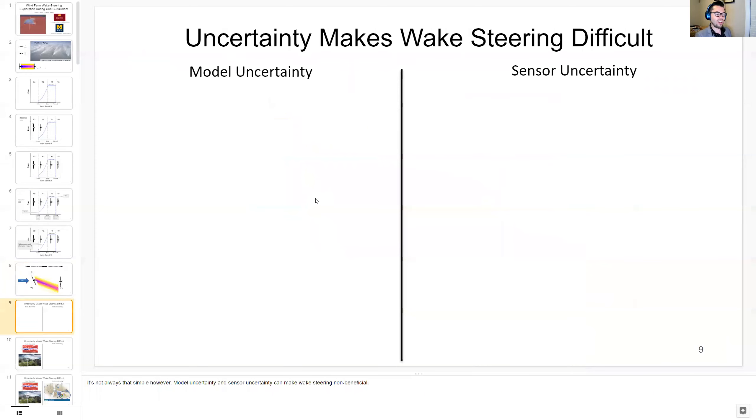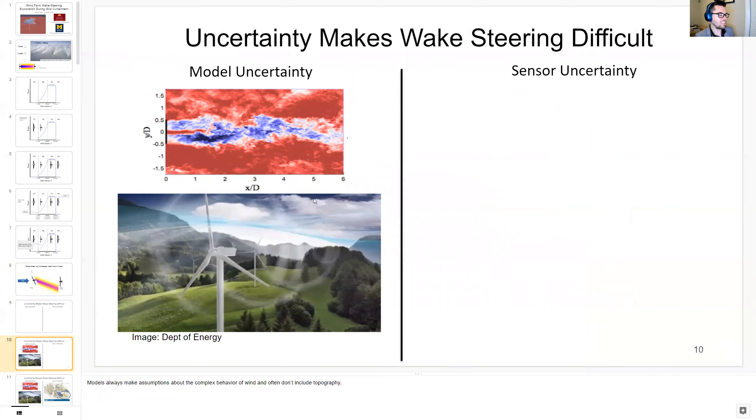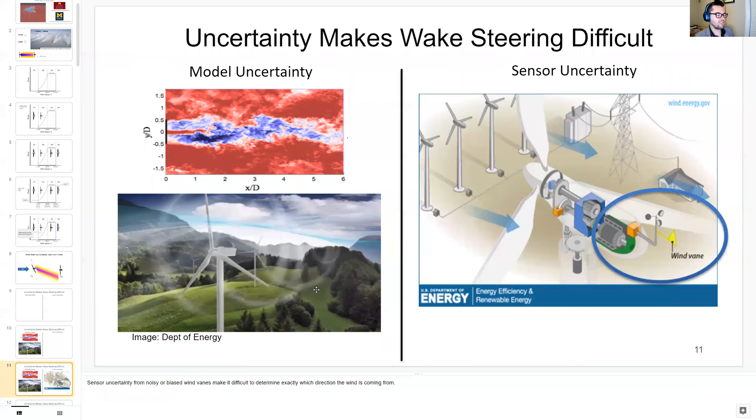It's not always that simple, however, because model uncertainty and sensor uncertainty make wake steering not as beneficial as it could be. Model uncertainty basically describes how models always make assumptions about the complex behavior of wind and often don't include topography in the wind farm that impact wakes. And sensor uncertainty is the noisy or biased wind vanes that make it difficult to determine exactly which direction the wind is coming from.